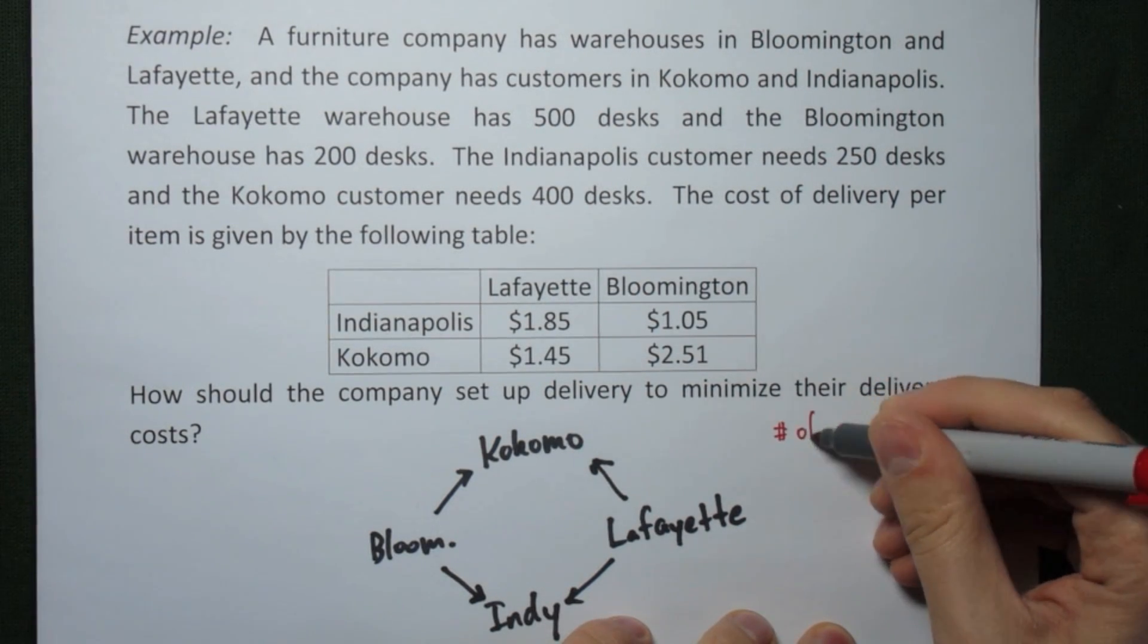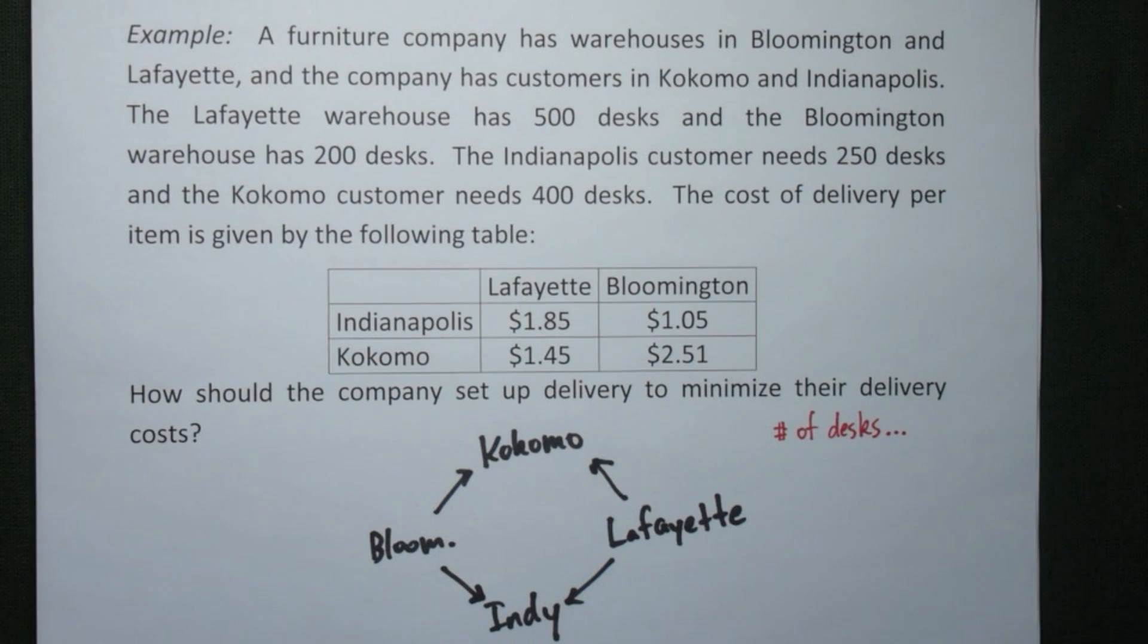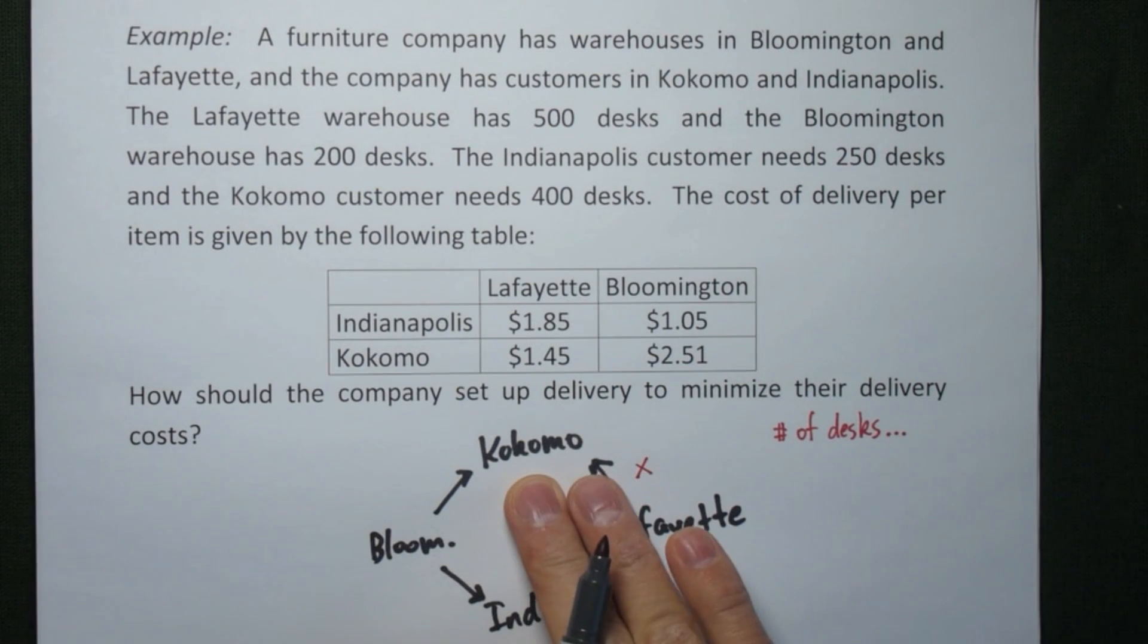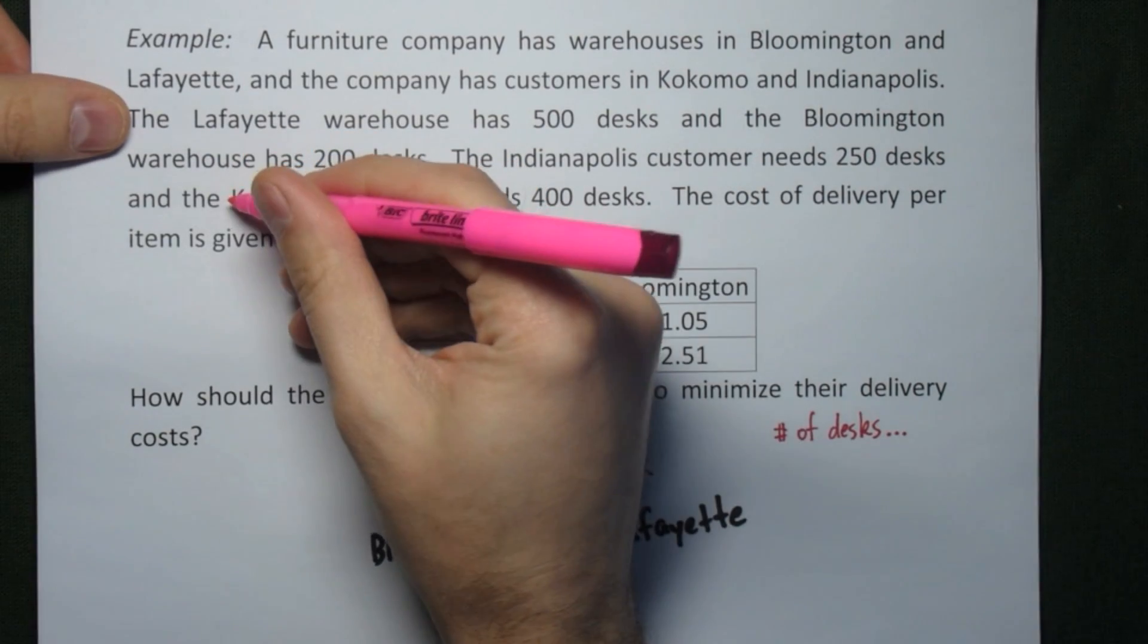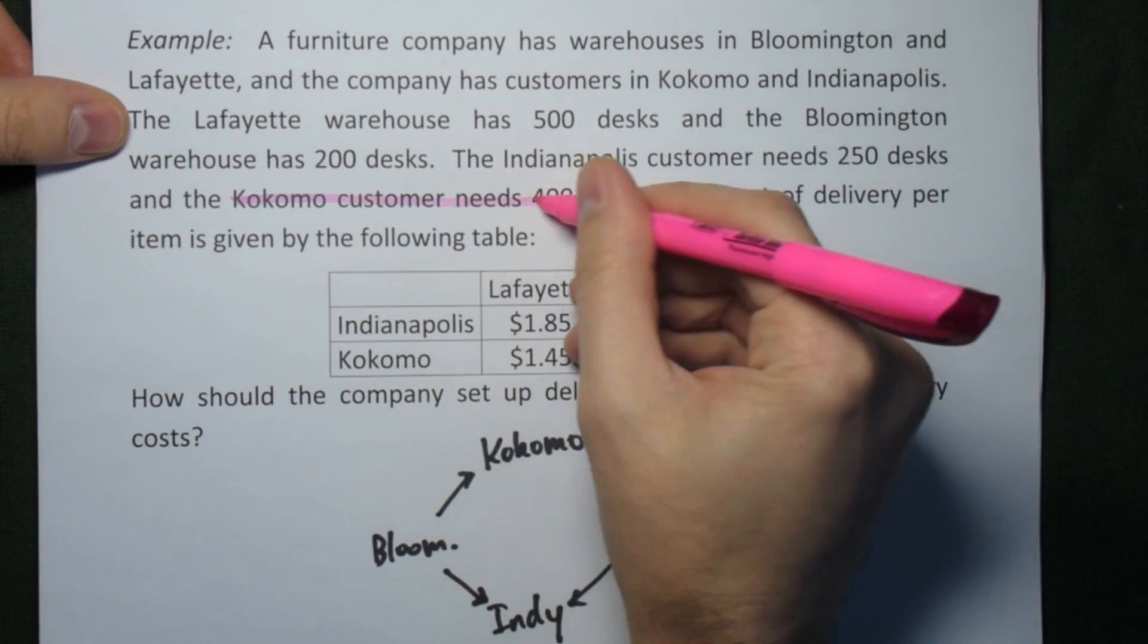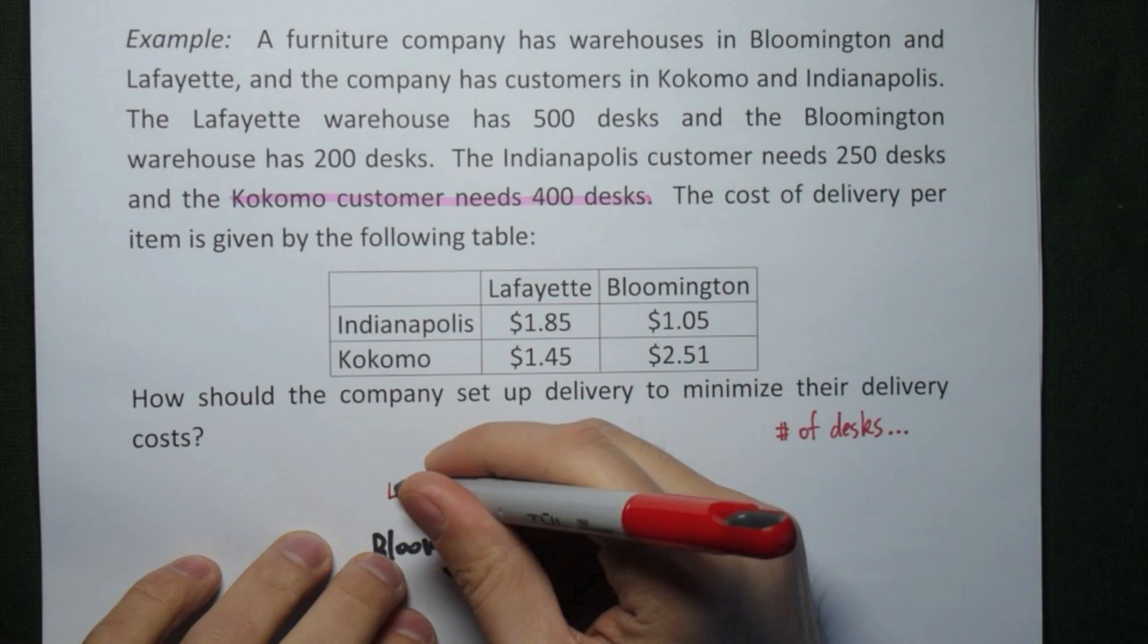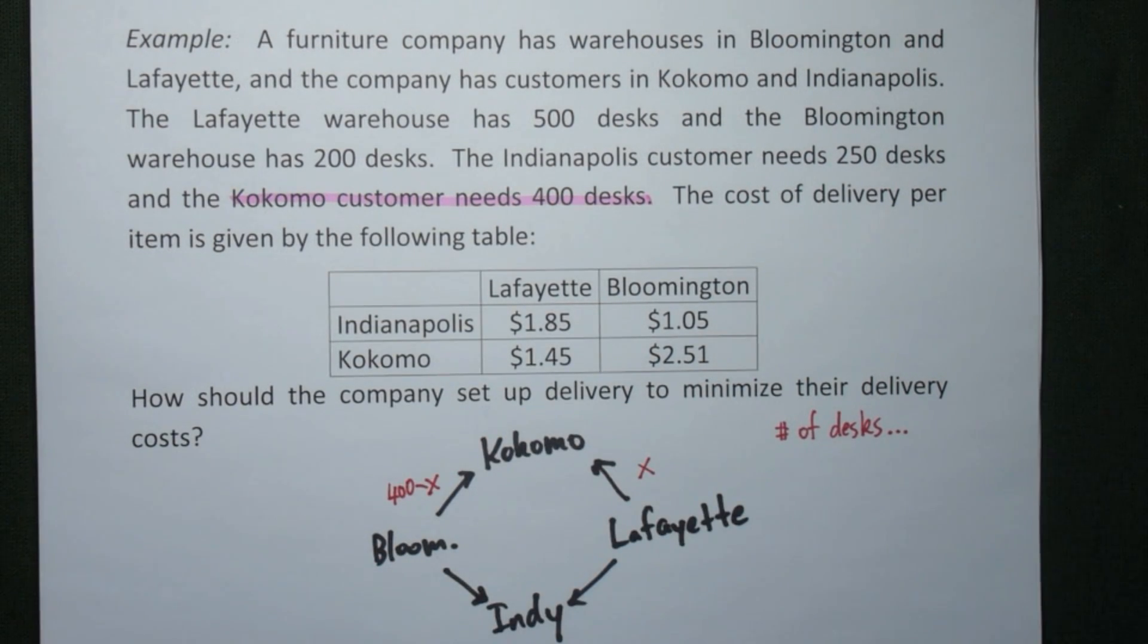Each variable will be the number of desks we send from one warehouse to one location. So we start by letting x be the number of desks that we ship from Lafayette to Kokomo. We take a look at the problem. The Kokomo customer needs 400 desks. So if we're sending x of them from Lafayette, the remainder has to come from Bloomington. In other words, 400 minus x desks have to ship from Bloomington to Kokomo.